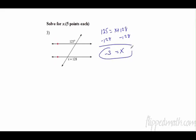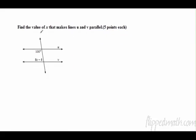x equals negative 3. All right, remember we're not saying the angle is negative 3 because it couldn't be, but we're saying x is negative 3. If you look, negative 3 plus 128 is 125. Next one: find the value that makes it parallel.